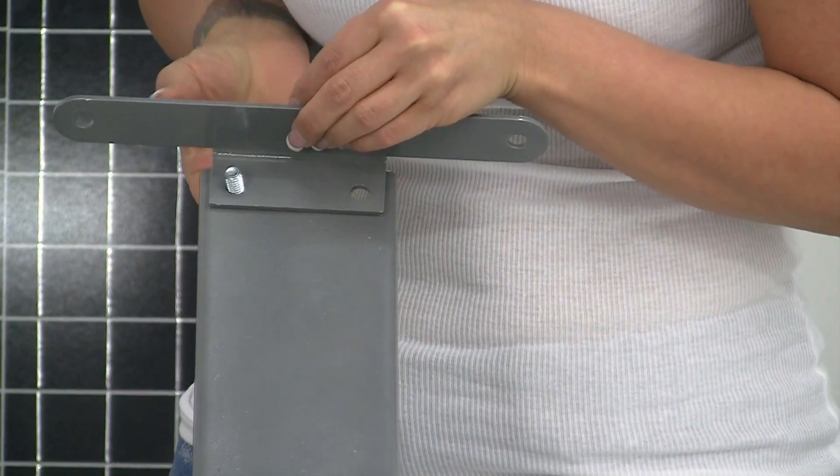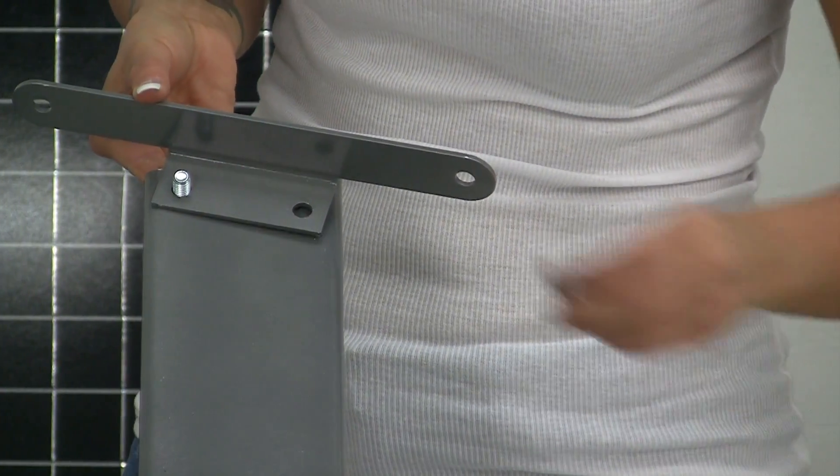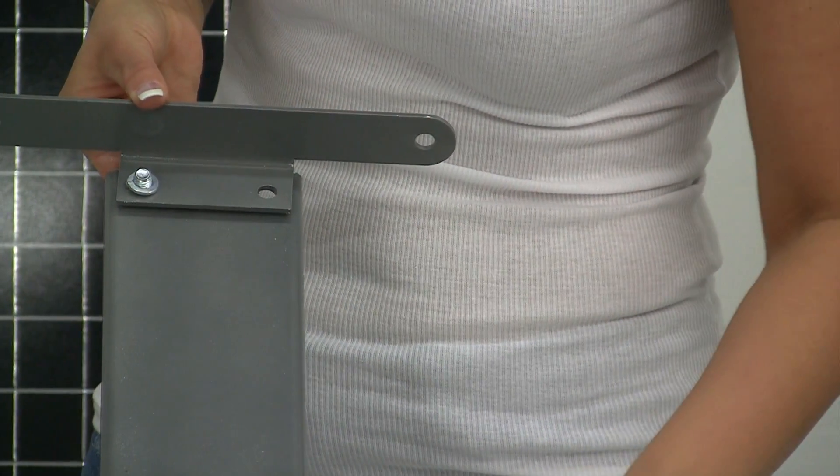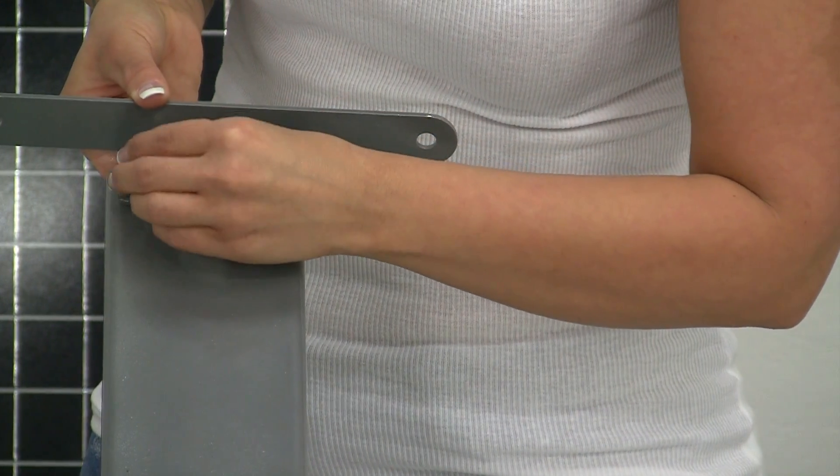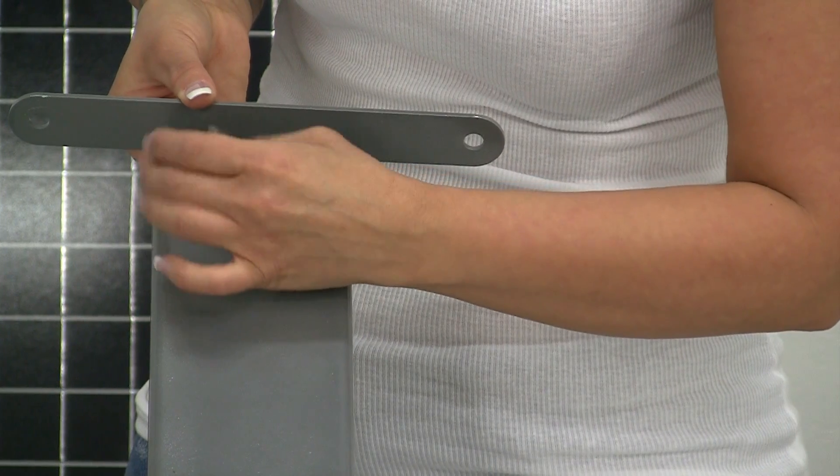Okay, bolt, lock washer, nut. Again, you guys can tighten all this up later, right before you mount it on the pole.